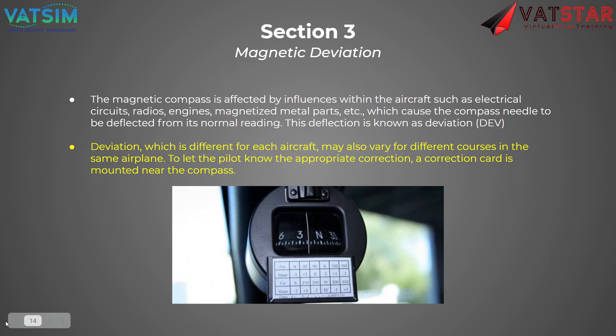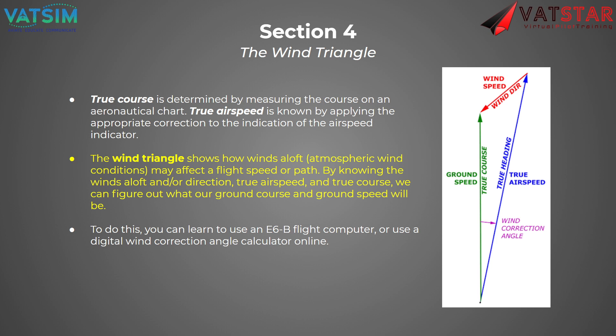The magnetic compass is also affected by influences within the aircraft such as electrical circuits, radios, engines, and magnetized metal parts, which causes the magnet in the compass to be deflected from its normal reading. This is known as deviation — it's different from variation. Deviation is different for every aircraft because different aircraft have different magnetic influences, with slightly different metal compositions or different avionics installed. That causes courses to vary in the airplane, so there may be an individual correction necessary for each airplane, and a correction card is mounted near the compass.